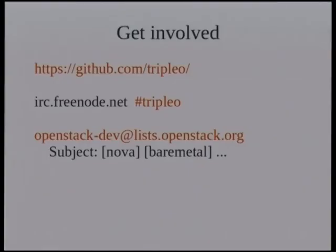If you want to get involved, all our stuff is up on GitHub under Triple-O - that's anything not yet merged into OpenStack trunk. We're working as close to trunk as possible. We're all on IRC on Freenode at hash-triple-O. If you want to talk on the mailing list, please use those two tags. Questions?